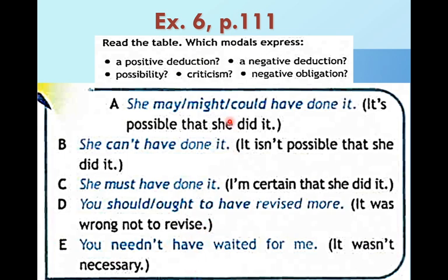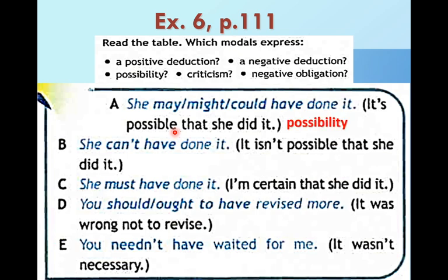May / might — значение 'it's possible, возможно'. She may could have done it. Здесь мы должны понять, какое значение выражает каждый модальный глагол. If it's possible — возможно, что она это сделала — это positive deduction или possibility? It's a possibility. The next: she can't have done it — it isn't possible that she did it.